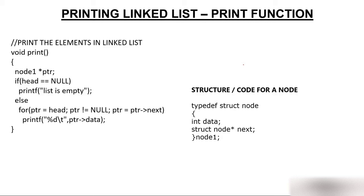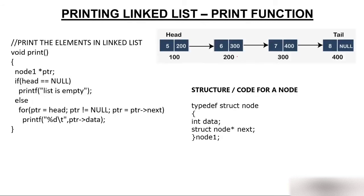We have already created our linked list prior to this video in the create function. There are four nodes with values 5, 6, 7, and 8. Head is representing the first node at address 100, and tail is representing the last node at address 400. The node structure has two parts: data of integer type and an address pointer.